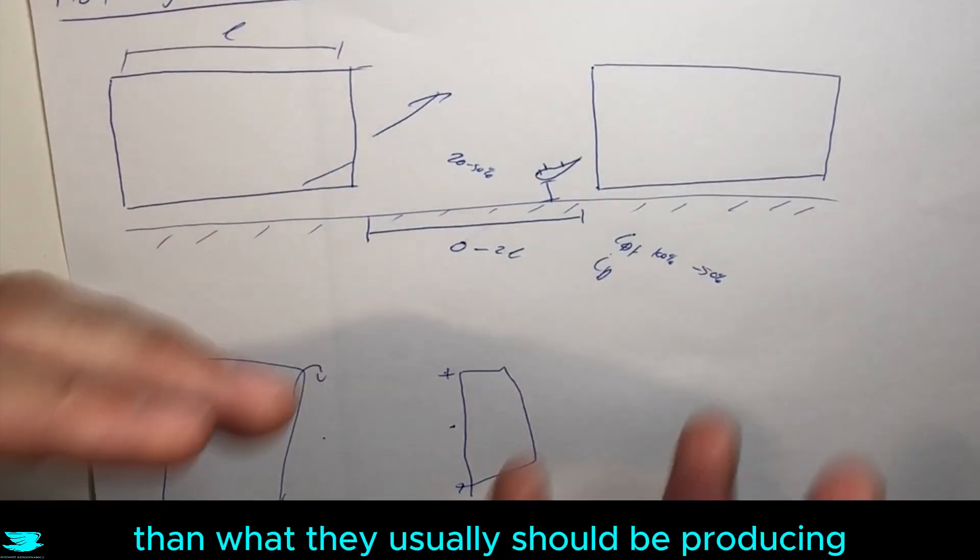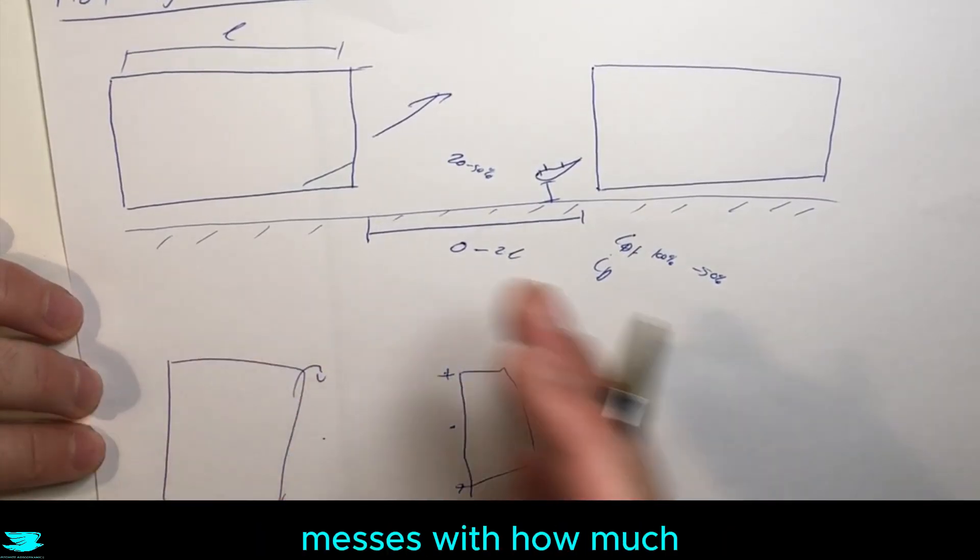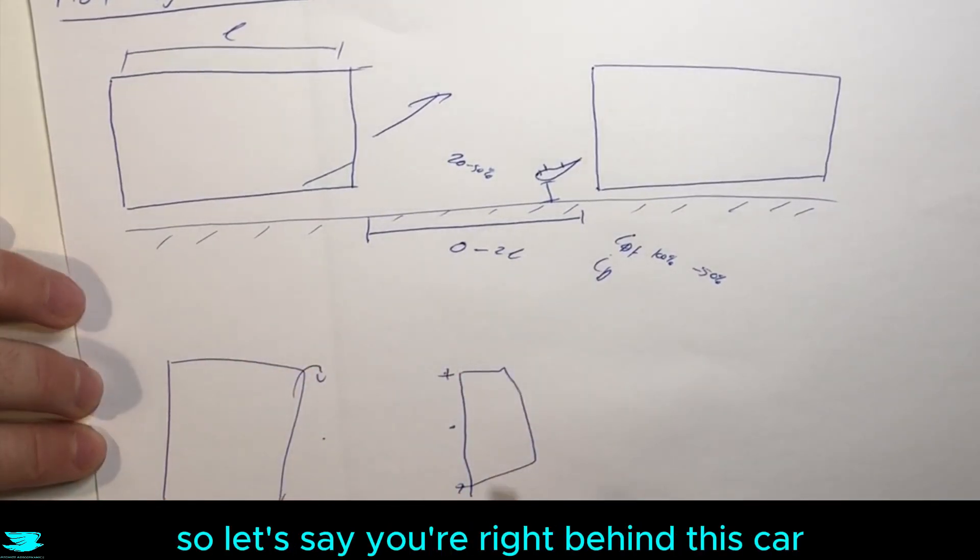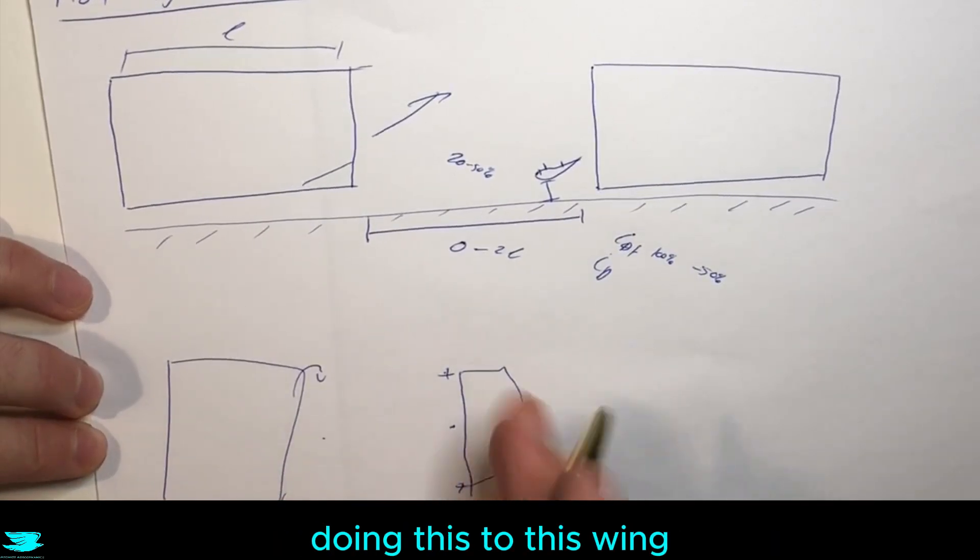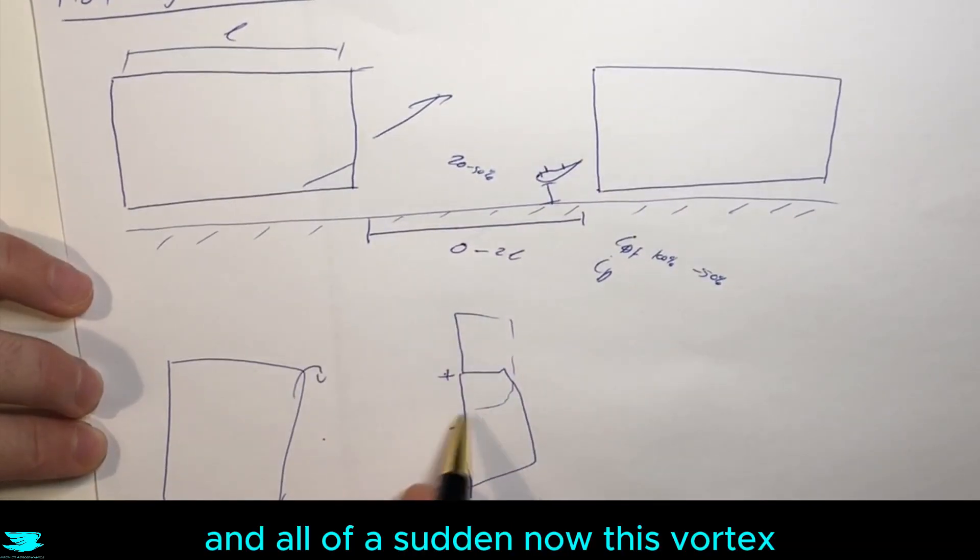That can also result in different loadings on the wing, and that also then messes with how much downforce you can produce. So let's say you're right behind this car and you have these vortices doing this to this wing.